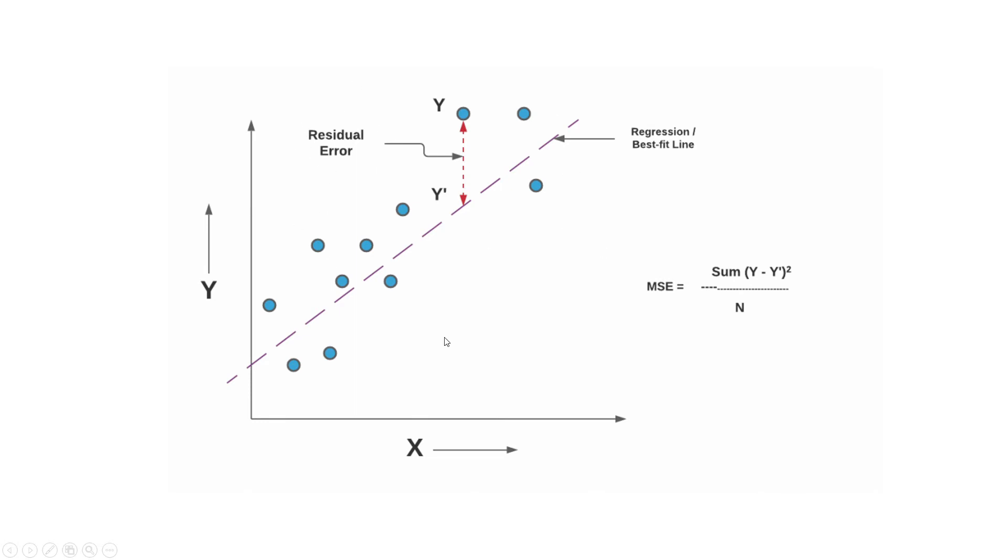From this residual error, we can calculate the mean squared error using this simple formula. Sum of squared residual error divided by the number of dots or the number of sample. And we need to find the minimum MSE or mean squared error. Where the mean squared error is the minimum, that's the best fitting line.